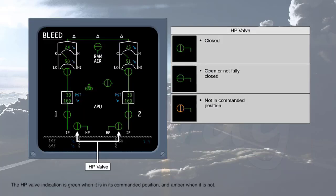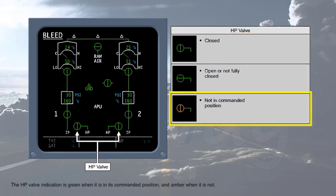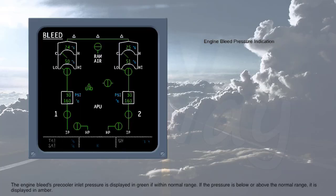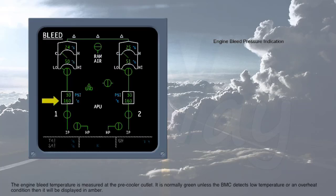The HP valve indication is green when it is in its commanded position and amber when it is not. The engine bleed pre-cooler inlet pressure is displayed in green if within normal range; if the pressure is below or above the normal range, it is displayed in amber. The engine bleed temperature is measured at the pre-cooler outlet. It is normally green unless the BMC detects low temperature or an overheat condition, then it will be displayed in amber.